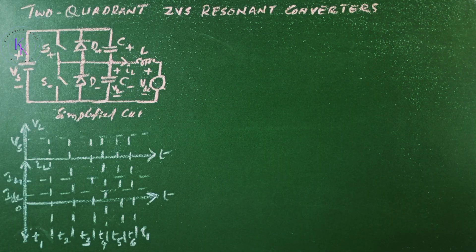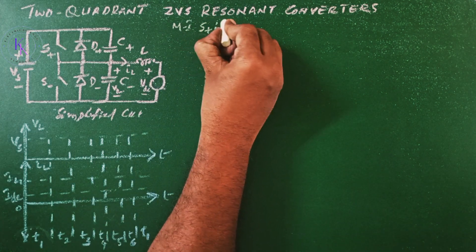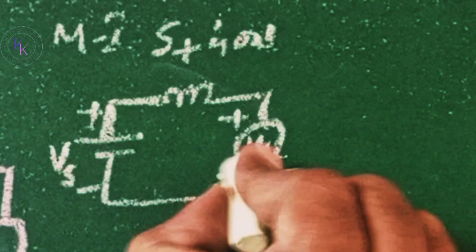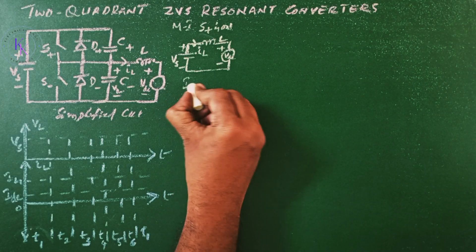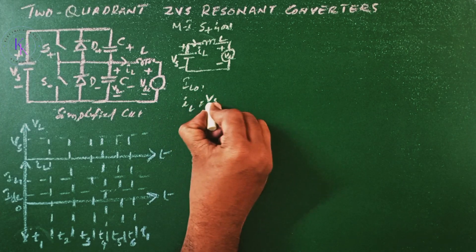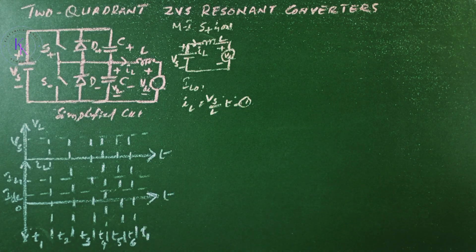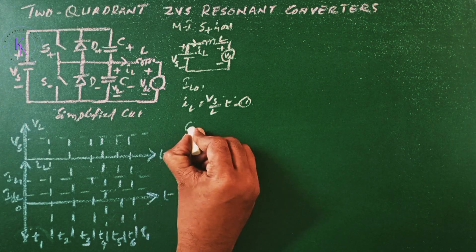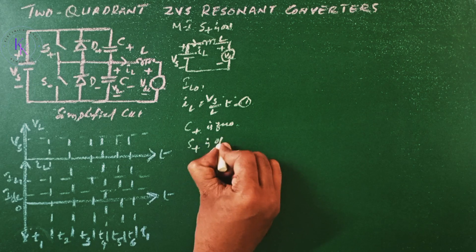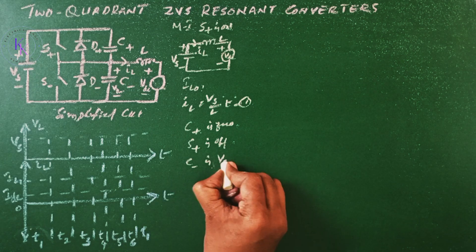The circuit operation can be divided into six modes. Mode 1 when the switch S plus is on, then the equivalent circuit is given by IL. Assuming that the initial current is IL naught, then the inductor current IL is given by IL equals Vs divided by L at time T, equation number one. This mode ends when the voltage on the capacitor C plus is 0 and S plus is off. The voltage on C minus at the end is Vs.